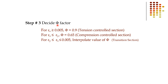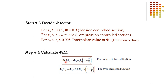Step 3: Select the phi factor. For a tension-controlled section, use φ = 0.9. For a compression-controlled section, use φ = 0.65. If the strain value falls between the yield strain and 0.005, interpolate φ for the transition section.